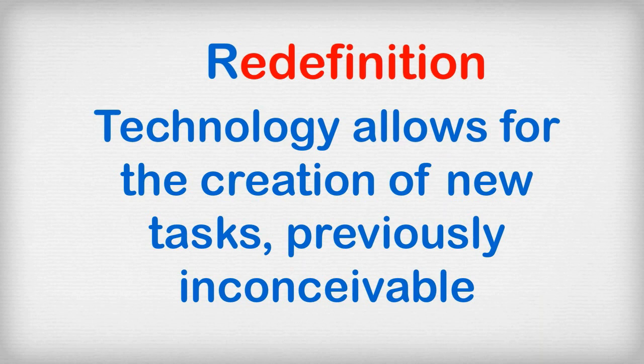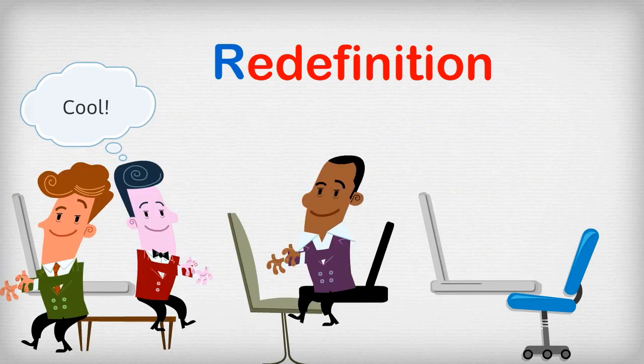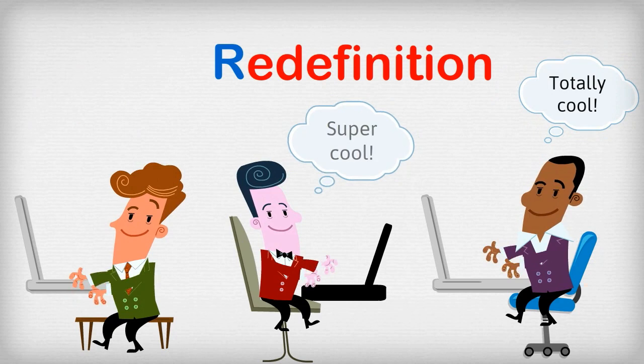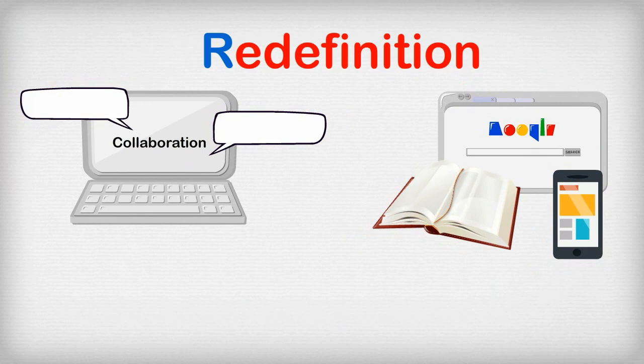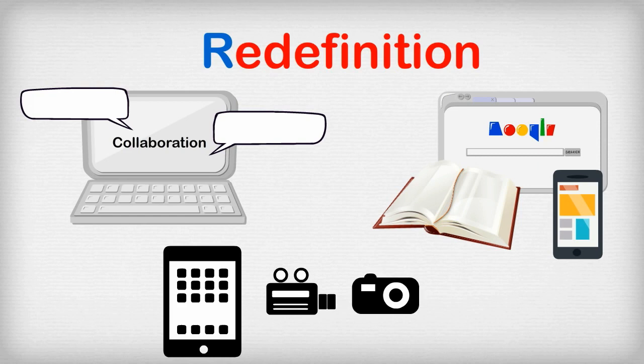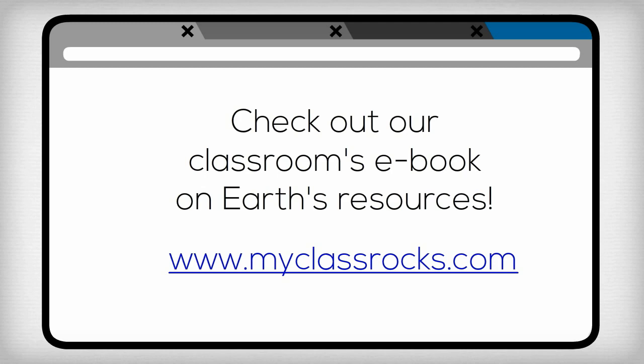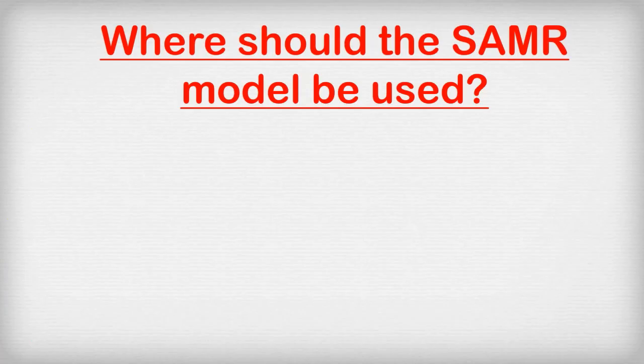R stands for Redefinition. Technology allows for the creation of new tasks, previously inconceivable. You'll see a lot of collaboration, discussions, and creating with technology in this part of the model. For example, a classroom is asked to create an eBook on a curriculum topic. Groups are assigned to work on subtopics, heavy collaboration occurs, research is conducted using various sources, and students use an app to create the eBook with embedded videos, photographs, and audio. The final eBook is posted on the classroom website for parents, administrators, and others to view.